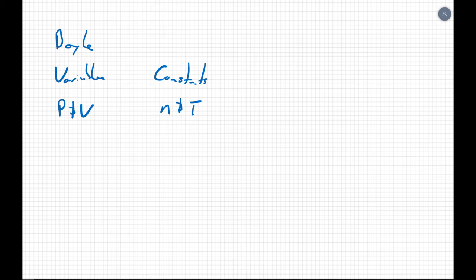PV equals nRT. Variable, variable, and all three of these things are a constant. So if all three of these things are a constant, I'm just going to call all three of these things together K. So PV equals K. That's Boyle's law.